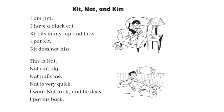This is the lesson. The title is Kit, Nat, and Kim. Now we're going to find out who's Kit, who's Nat, and who's Kim. Let's start reading. I am Jim. So the boy here is Jim. This is Jim.